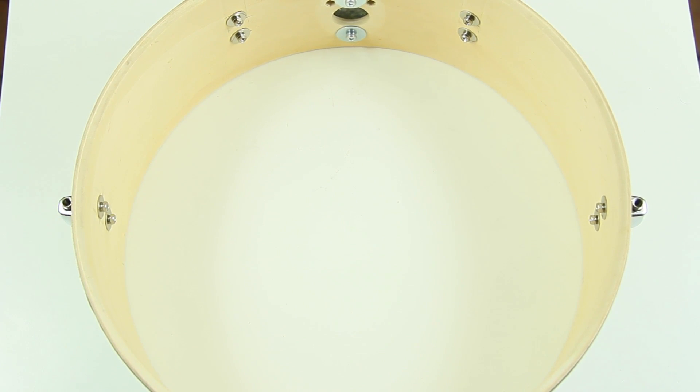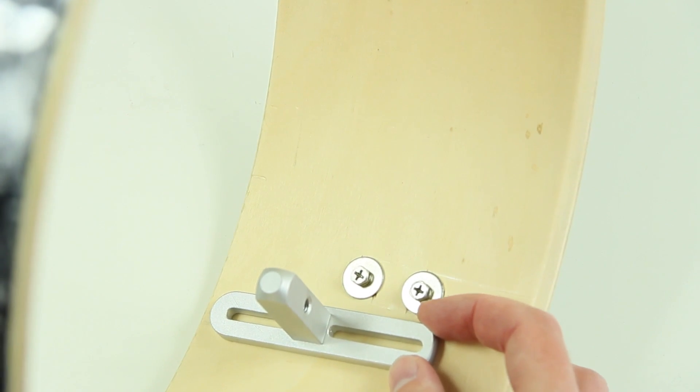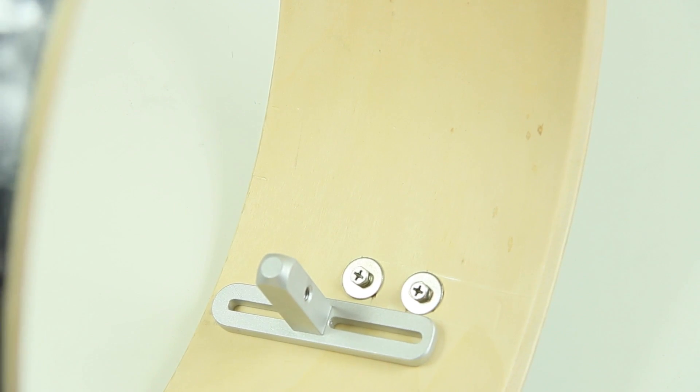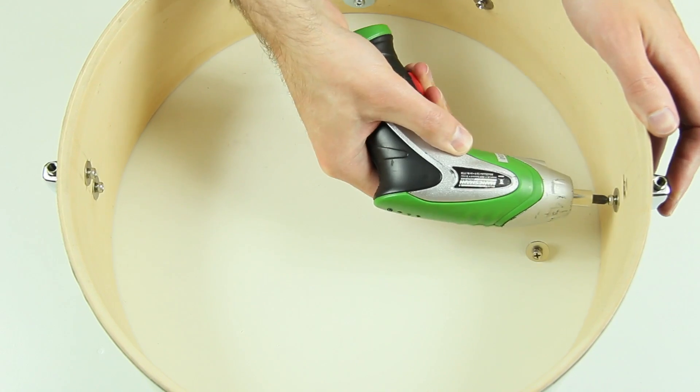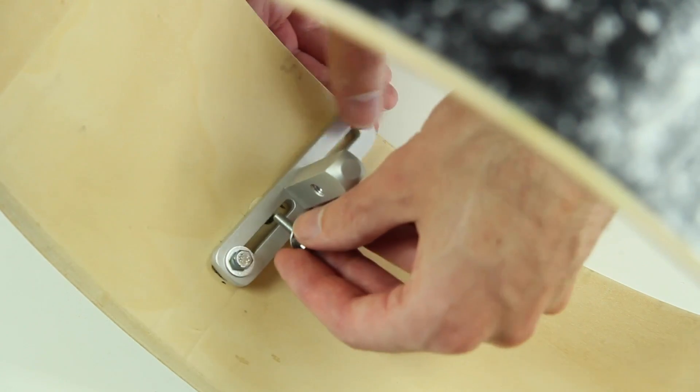We are using a Pearl Rhythm Traveler pad. Not ideal for this trigger bar, but let's see if we manage to apply the system. Let's get rid of these four lock screws and place the brackets inside the shell.